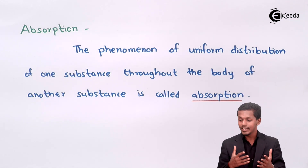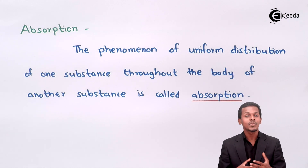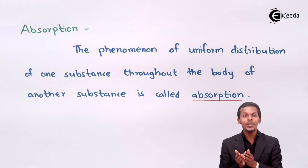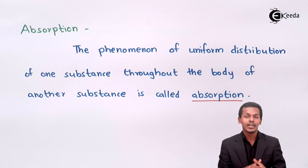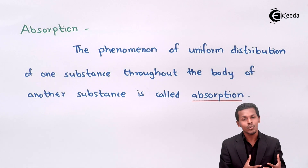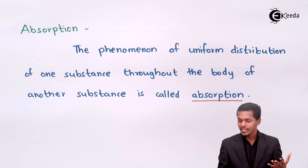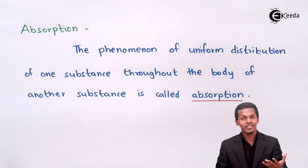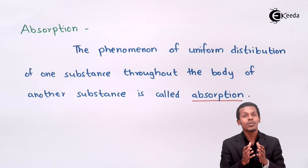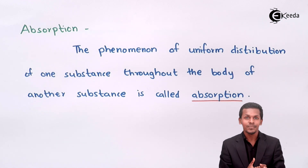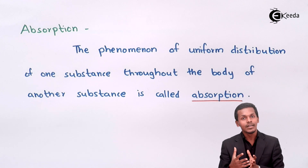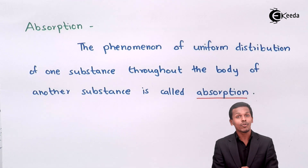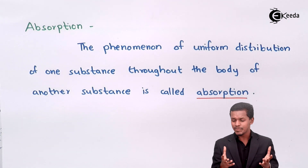Another example: ammonia is very soluble in water. In this case, the ammonia completely dissolves and mixes with H₂O — there is a uniform distribution of one substance throughout the body of another substance. The ammonia is completely dissolved in the water molecule, and this phenomenon is known as absorption. This is a bulk phenomenon.